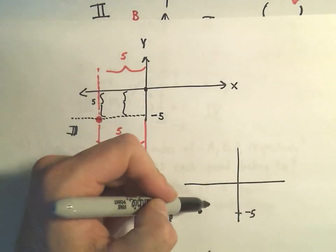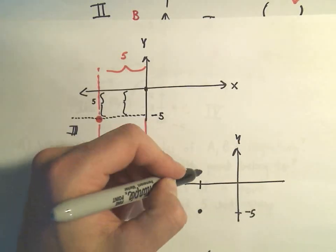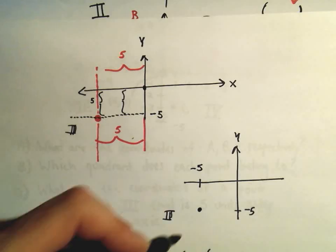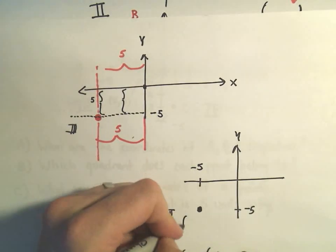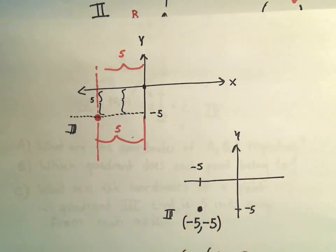And the only way to be in quadrant 3 but to be 5 units away from the y axis would be at the x coordinate of negative 5. So a point that's 5 units away from both the x and y axis in quadrant 3, we could say that's the point negative 5 comma negative 5.